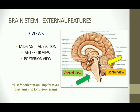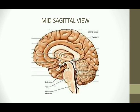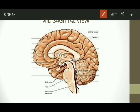Coming to the external features, there are three different views. The view on screen right now is the mid-sagittal section. The green arrow shows the ventral view and the yellow arrow shows the dorsal view. The terms ventral and dorsal are similar to anterior and posterior in brain anatomy. The mid-sagittal section shows the cut section of the brain — here is the midbrain, the pons and the medulla. The cerebellum is visible, and the space between the cerebellum and the pons is the fourth ventricle. You can also see the corpora quadrigemina and the pineal body above.